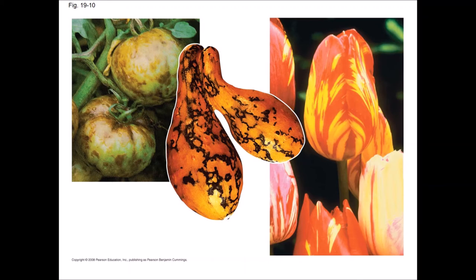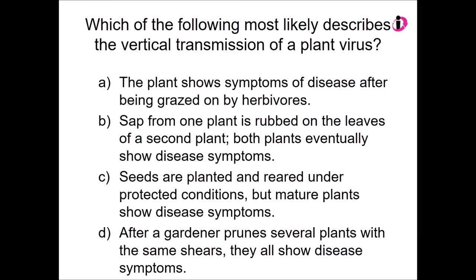Viroids are economically important RNA viruses that infect plants. These are circular RNA molecules that can be transmitted either horizontally or vertically and disrupt plant growth. Thinking about vertical transmission of a plant virus — which of these might be true of it? For this question, you need to figure out the difference between horizontal and vertical transmission. You can leave your best guess in the comments.